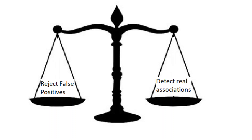Correcting for multiple testing in this way solves the problem of too many false positives, but there is always a trade-off to be made between rejecting false positives and the power to detect real associations.